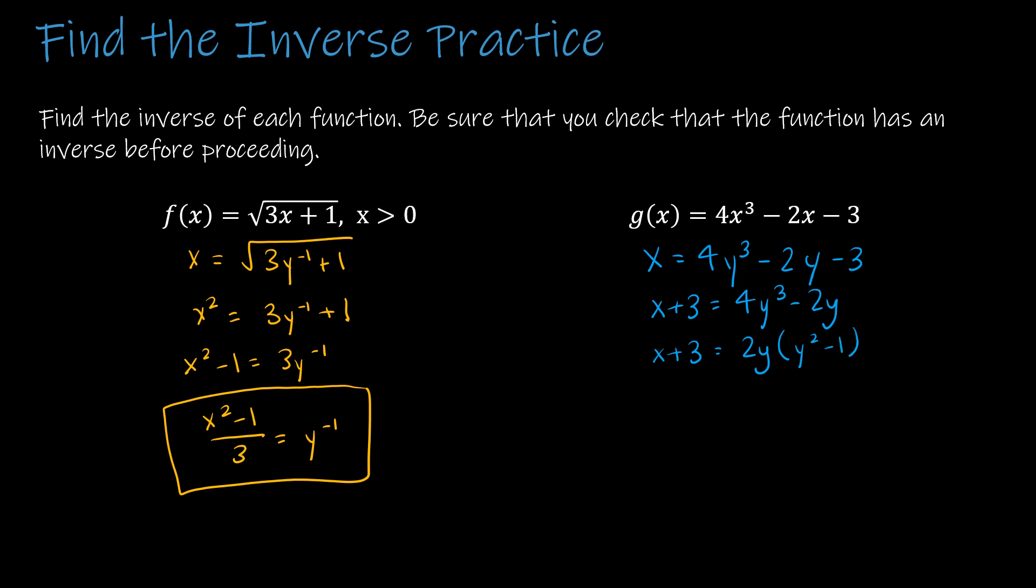But this is really hard to do. So what if I now just go backwards and check to see if an inverse does, in fact, exist? g'(x) would be 12x^2 - 2. If I set that equal to 0, I would add 2 to each side, divide by 12, and take the square root.